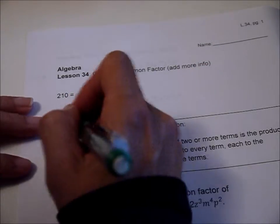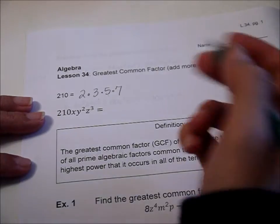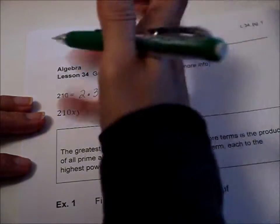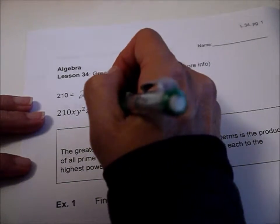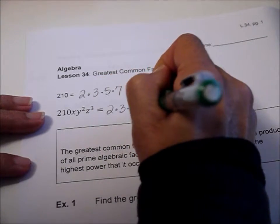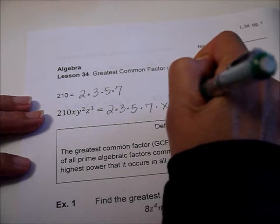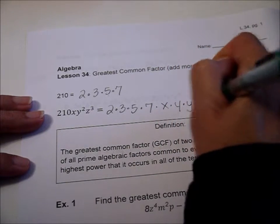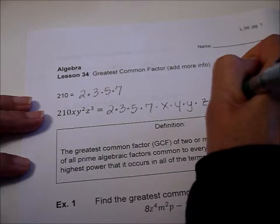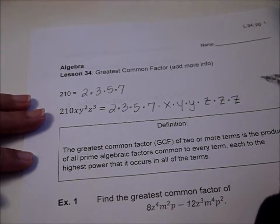Let's look at the algebraic factors of 210xy²z³. If we were to break that out into their pieces, it would be the same coefficients or same numbers and then we would have this. So there it is all broken out.